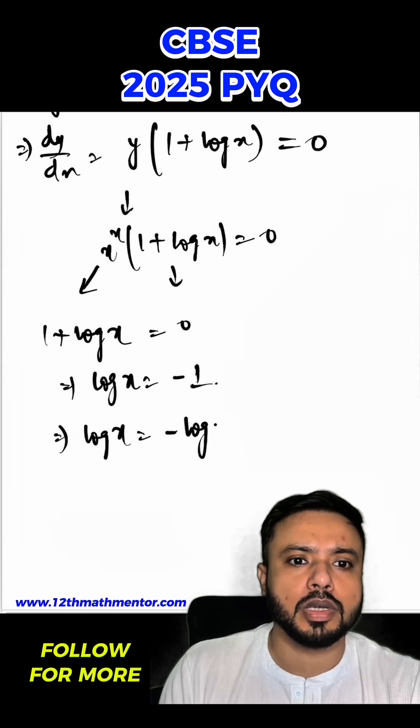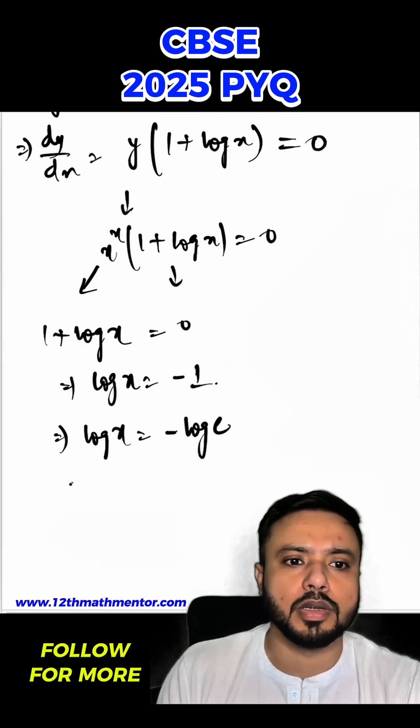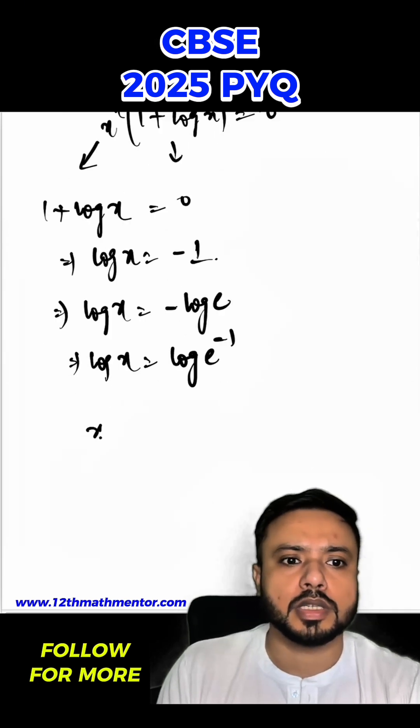equal to negative of log e because log e value is 1. So I can say that log x will be equal to log e^(-1), hence x will be equal to e raised